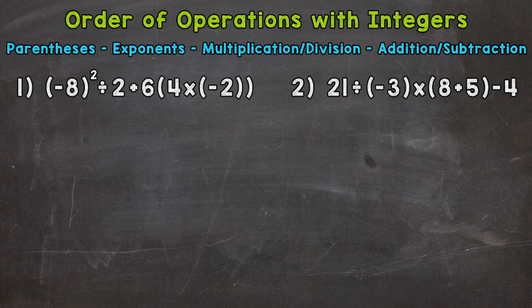So let's solve what's in the parentheses at the end of the problem — 4 times negative 2. We have a positive times a negative, that's going to give us a negative 8. I'll put that negative 8 in parentheses to help us stay organized, and we'll bring down everything we did not use.